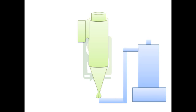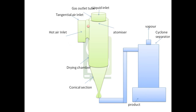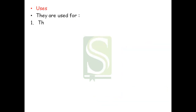The particle size of the final product ranges from 200 to 500 mm. The construction includes a tangential air inlet, hot air inlet, gas outlet tube, liquid inlet with atomizer, drying chamber, conical section, a region from which vapor escapes, and a cyclone separator where the product is finally separated and collected.